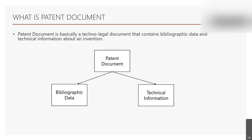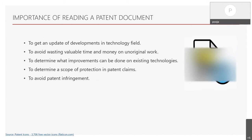Let us understand the different aspects of the patent document. Every patent document is categorized to have two types of data: one is the bibliographic data and the second one is the technical information or technical data. We will discuss both types in further slides. Now we'll move to the next slide, which is about the importance of reading a patent document.